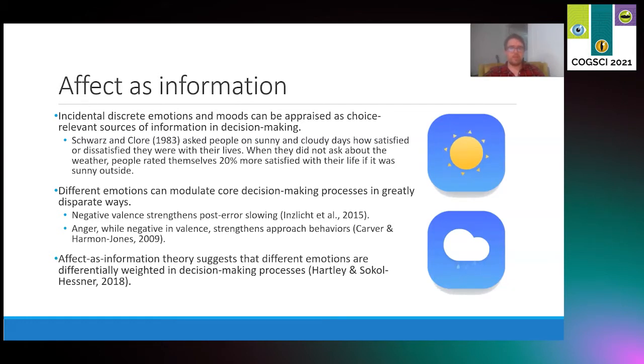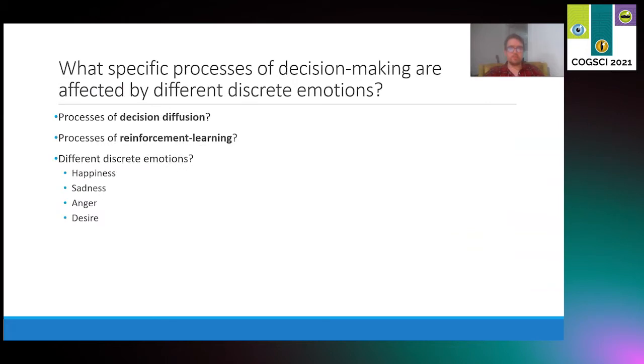Different emotions can have differential effects on decision making processes. Negative affect can produce both approach and avoidance behaviors. Fear can increase post error slowing and anger can produce more risky behavior. This variance is perhaps best supported by affect as information theory, which posits that different emotions can differentially be weighted in decision making processes.